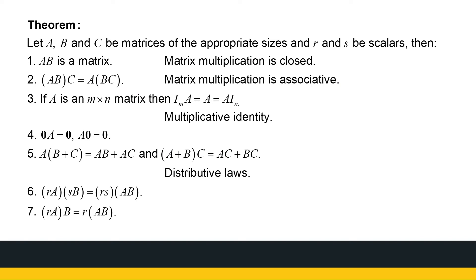Some properties of matrix multiplication: it is closed and associative, but not commutative — we saw that. There is a multiplicative identity, namely the identity matrix of the correct size. Multiplying by a zero matrix gives a zero matrix of appropriate size. We also have distributive laws and scalar multiple laws.